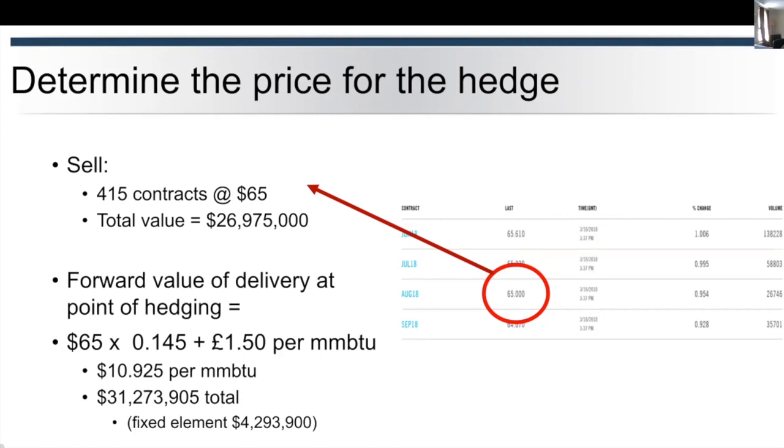The total value of the contracts at that point are about $27 million worth. The forward value of delivery at that point of hedging: you've got $65 which is our marker times the 0.145 plus the $1.50, the equivalent of nearly $11 per mmBTU, which is about $31 million. The fixed element of that $1.50 is $4.2 million. So if we take that $4.3 million from that $31 million, we'll end up with this value of about $27 million.